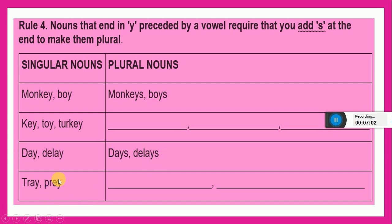Can you make the plural of tray and pray? Yes, it's very easy. Y is preceded by vowel a and e. You will add only s.